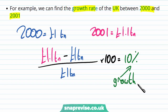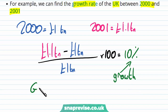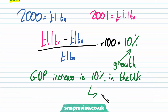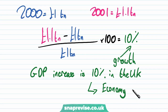We can see that the growth rate is measured from year to year. GDP increased 10% in the UK, which translates to the UK economy growing by 10% — we produced 10% more goods and services. This growth rate simply shows how much the economy has grown over time, specifically from 2000 to 2001.